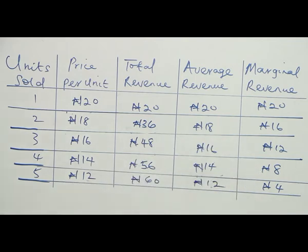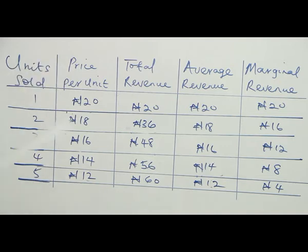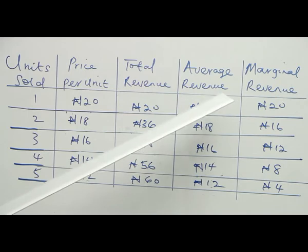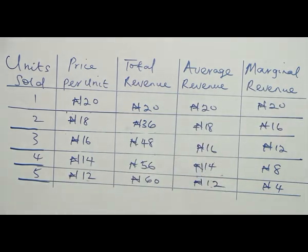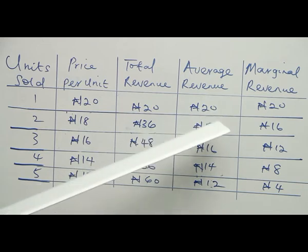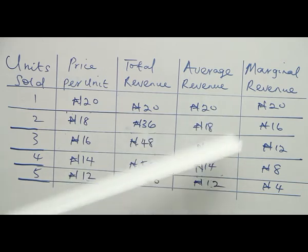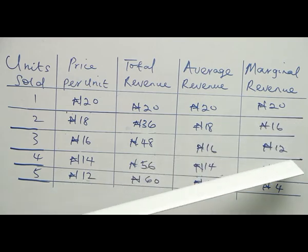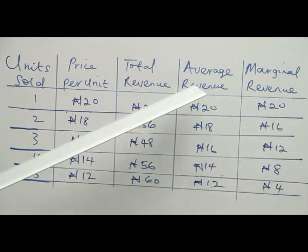In an imperfect market, the elasticity of the commodity in question will determine whether demand is elastic, inelastic, or unit elastic. As a firm, you must understand the price elasticity of your demand. Looking at the table under imperfect market, we discover that average revenue is decreasing — from 20 to 18 to 16 to 14 to 12 — and marginal revenue is also decreasing, but marginal revenue is below average revenue.